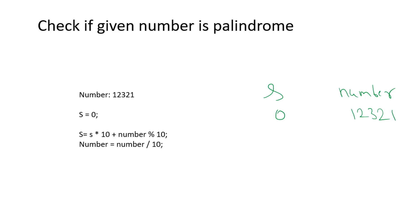Hey guys, welcome to Coding Simplified. Today we will see a very basic problem. We are given a number and we need to find out whether this number is palindrome or not. Palindrome means that if you go from start to end and again from end to start, it should be the same.